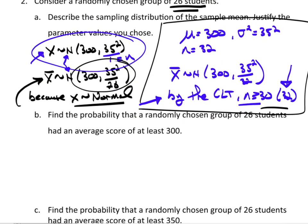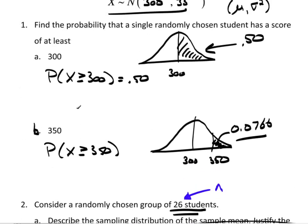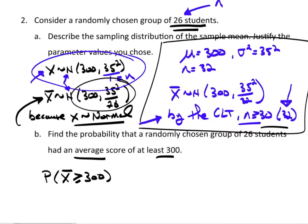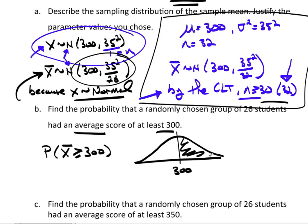Continuing on — this is the same question we did earlier, but now asking about the average score of a group of 26. The probability statement is: P(x-bar ≥ 300). The picture looks exactly the same — 300 is right down the middle, I'm looking for probability at least 300. Again, that's a half. Because 300 is still the mean.